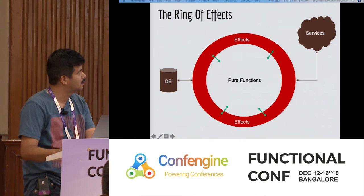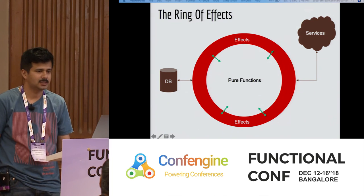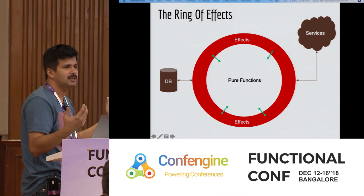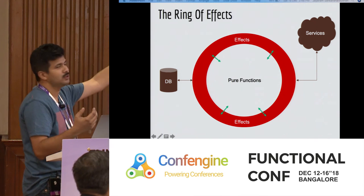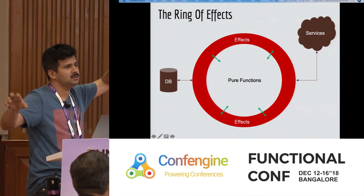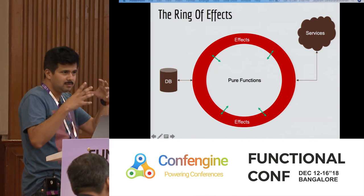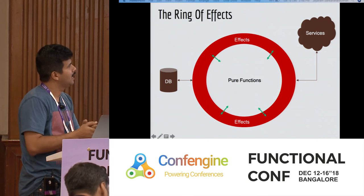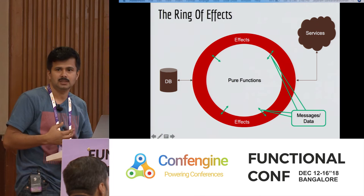What this gave us is an architecture with an outer layer that does all the effects — in this case invoking APIs on two systems: source and target. And there is an inner core built entirely of pure functions. These two layers communicate through messages and data.